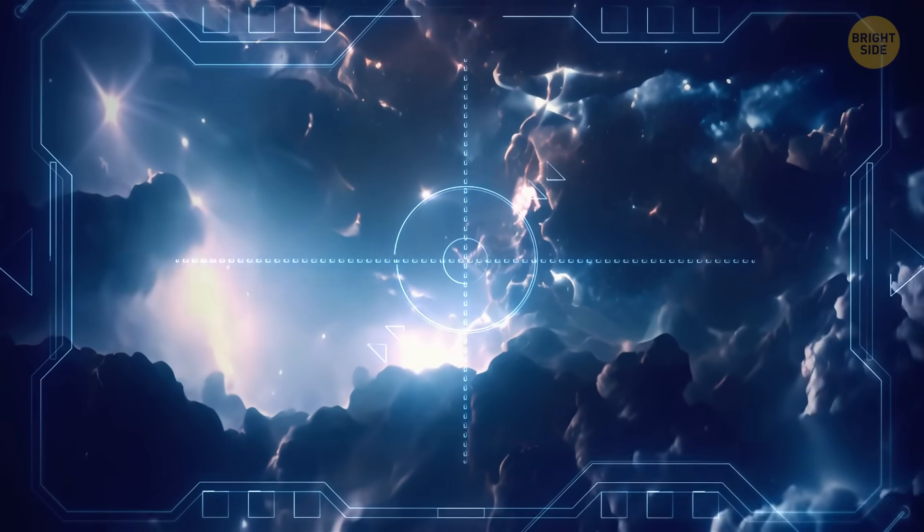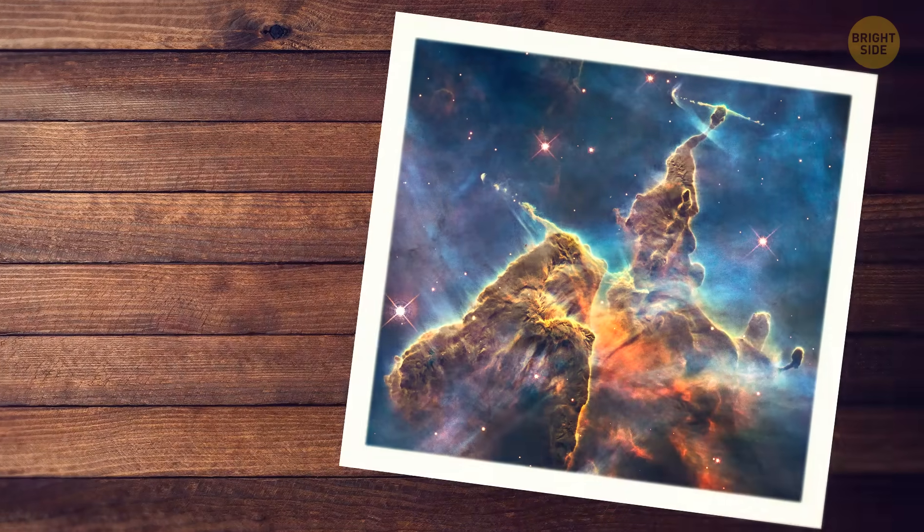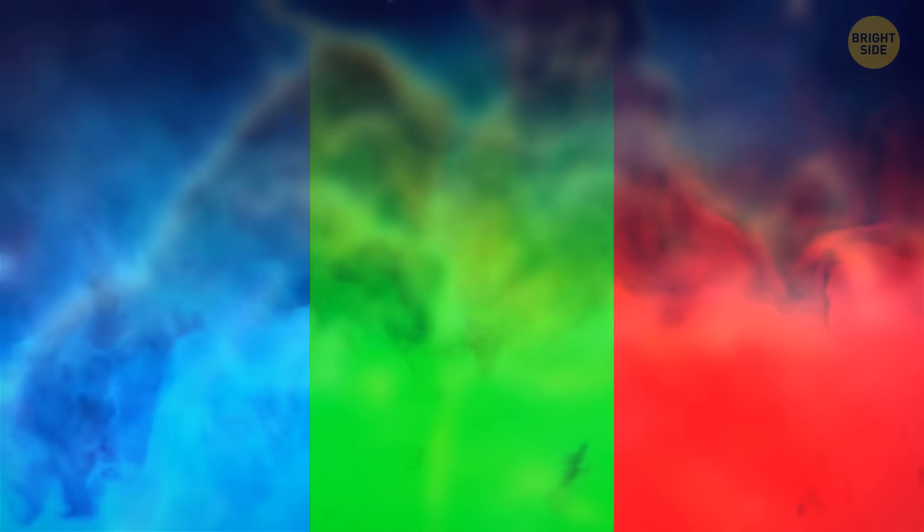And, if you take a look at this awesome picture, you'll see the elements putting on a colorful show. Blue represents oxygen, green is for hydrogen and nitrogen, and red is the sizzling sulfur.